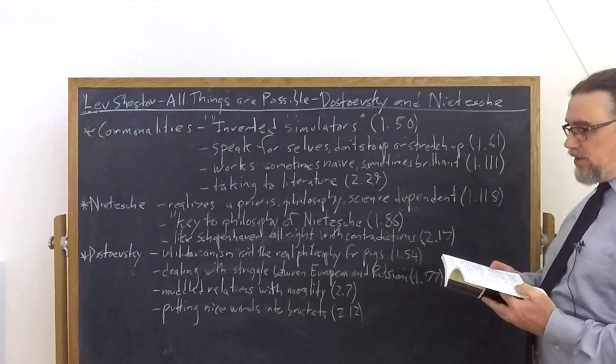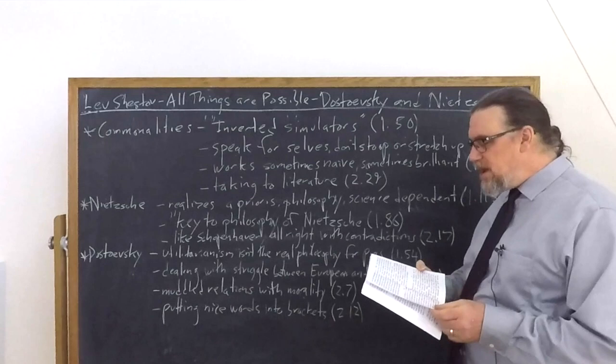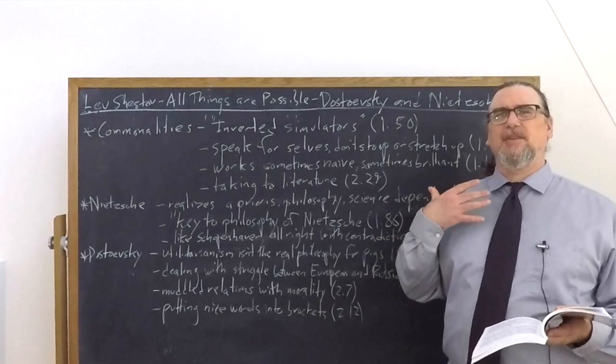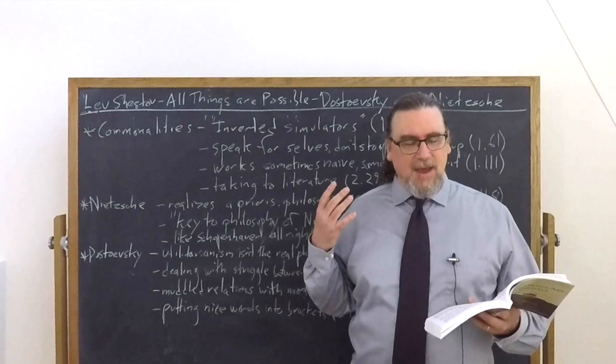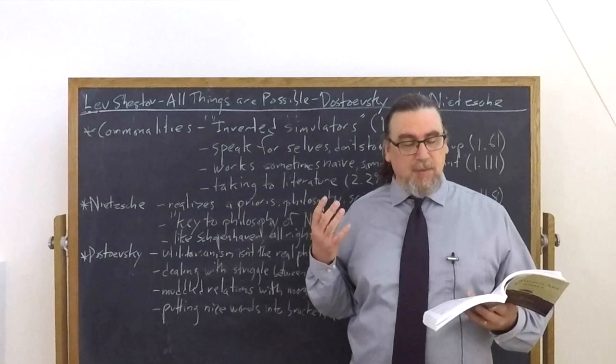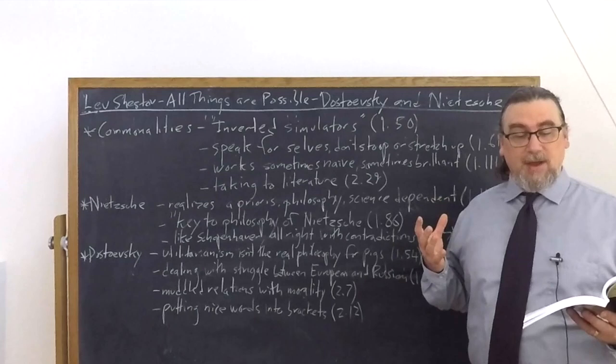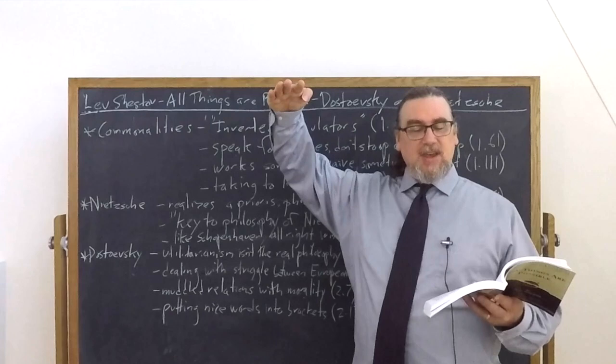He says, Nietzsche and Dostoevsky seem to be typical inverted simulators, if one may use the expression. Simulation is deceiving, is putting forth something. What did they do? They imitated spiritual sanity, although they were spiritually insane. They knew their morbidity well enough, but they exhibited their disease only to that extent where freakishness passes for originality. With the sensitiveness peculiar to all who are in constant danger, they never went beyond the limits. The axe of the guillotine of public opinion hung over them. One awkward move and the execution automatically takes place. But they knew how to avoid unwarrantable moves.